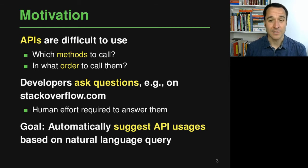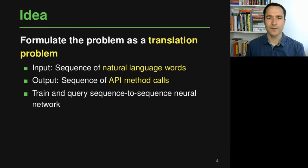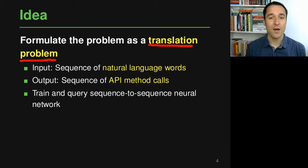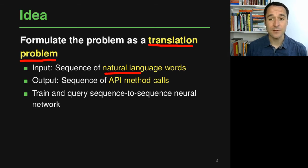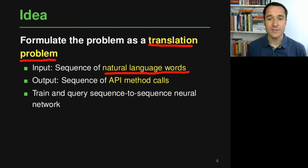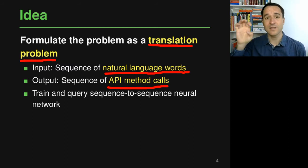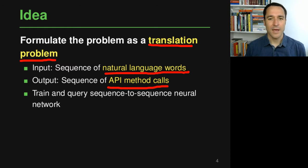The idea is to formulate the problem as a translation problem — specifically, translating from some input sequence to some output sequence. The input sequence is a sequence of natural language words describing what a developer wants to do with an API, and the output sequence is a sequence of API method calls telling you which methods to call and in what order. To make these predictions, the approach trains and then queries a sequence-to-sequence neural network.